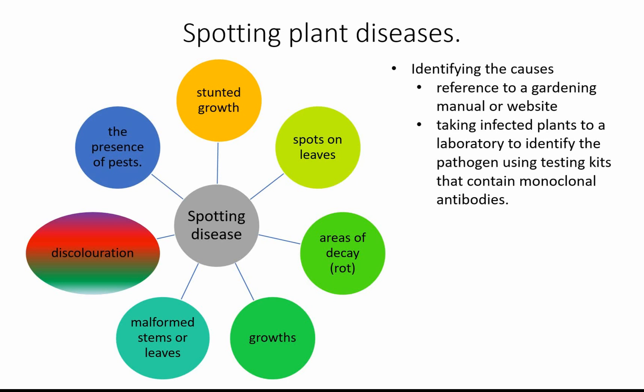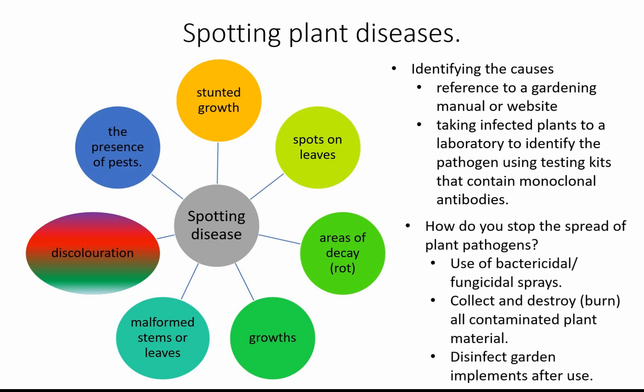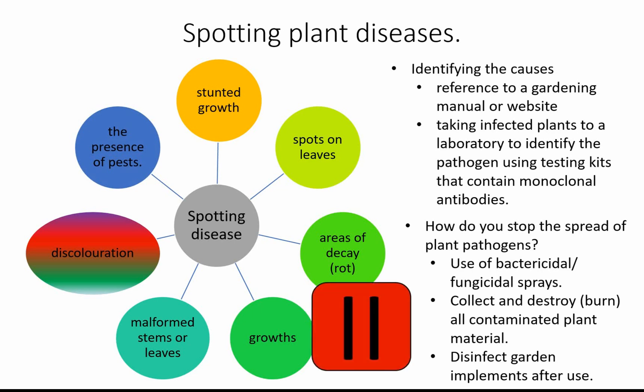To stop the spread: if it's a bacterial infection you might use a bactericidal spray or antimicrobial chemical; if it's a fungal infection like rose black spot, you'd use a fungicide. The key thing is to collect and destroy contaminated plant material — burn it — so it doesn't put spores, bacteria, or viruses into the soil to infect other plants. Also disinfect tools like secateurs, spades, and trowels after use. Take a couple of minutes now to make notes on the diseases section.